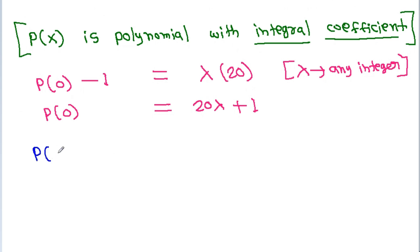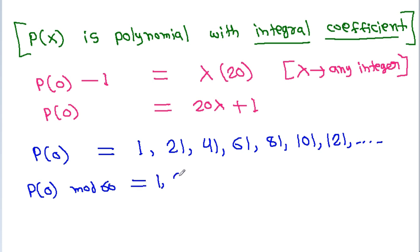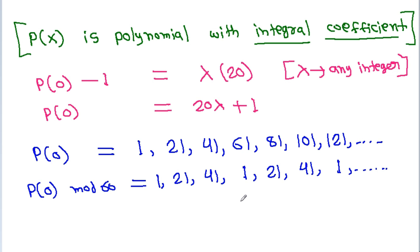So P(0) takes values 1, 21, 41, 61, 81, 101, 121, and so on. Therefore, the maximum value of the remainder when P(0) is divided by 60 is 41.